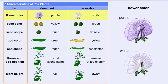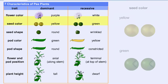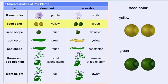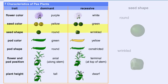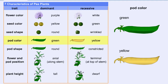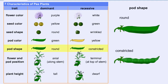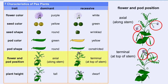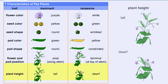These were: 1, flower color — purple or white; 2, seed color — yellow or green; 3, seed shape — round or wrinkled; 4, pod color — green or yellow; 5, pod shape — round or constricted; 6, flower position — axial or terminal; 7, plant height — tall or dwarf.